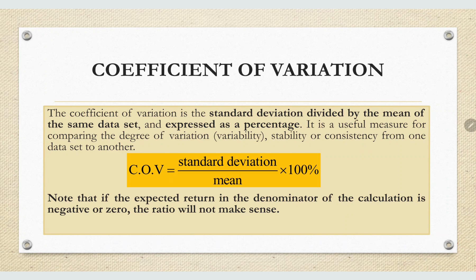Here is the formula for the coefficient of variation: CV equals the standard deviation divided by the mean, times 100%. Note that if the expected returns in the denominator of the calculation is negative or zero, the ratio will not make sense.